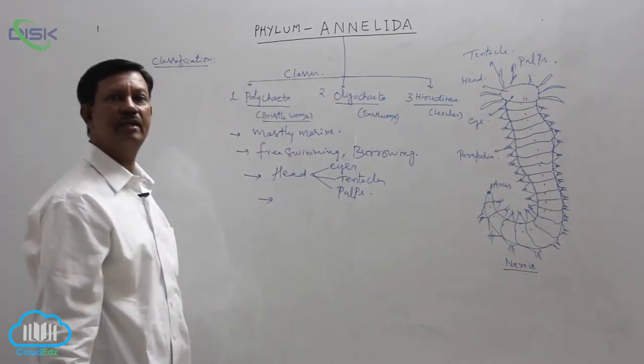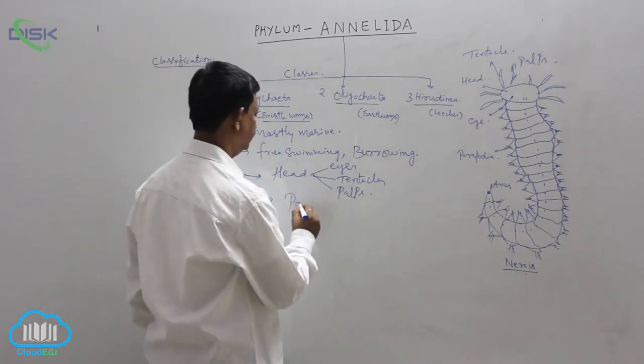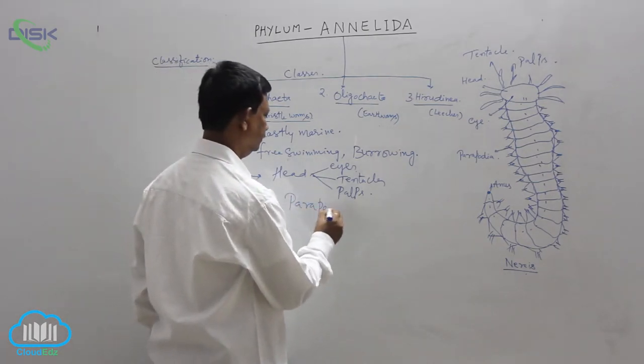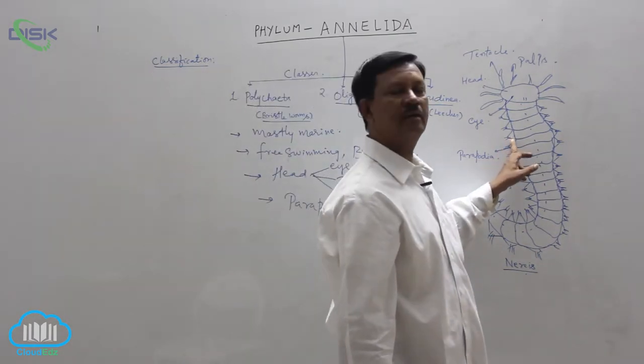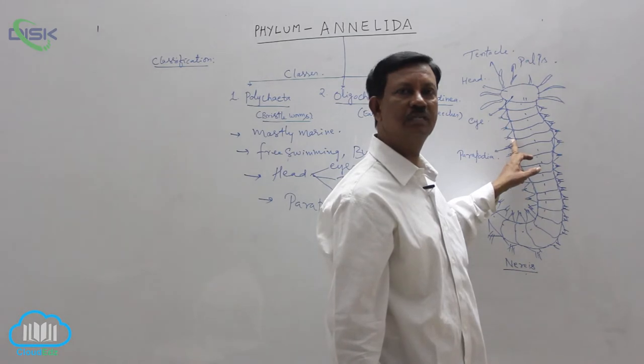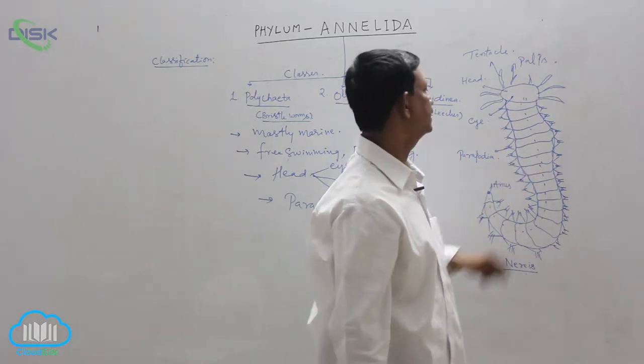The main locomotory organs are parapodia. They are present on the lateral sides of the segment. The parapodia not only help in locomotion, they also help in respiration.